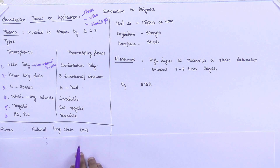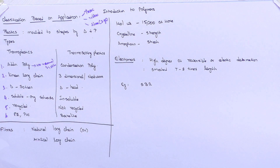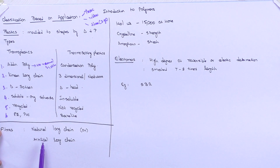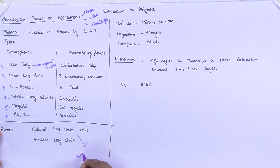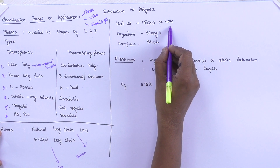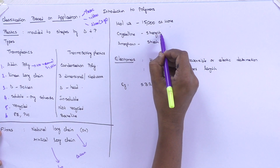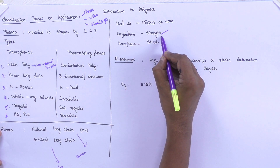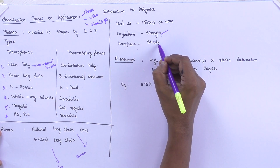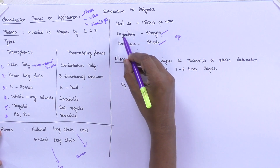For fibers — natural long chain and artificial long chain fibers are available. The molecular weight of fibers should be 15,000 or more. Natural long chain fibers — we saw the example of cotton; artificial long chain fibers — we saw the example of nylon. If the polymer is crystalline, it gains strength; if the polymer is amorphous, it gains stretch.